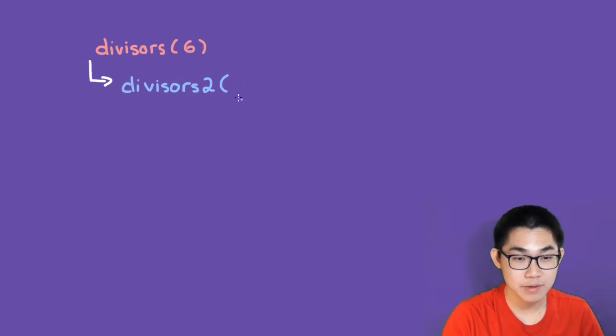And this one is going to have three parameters. We're going to start at 1, going up to this number, which is 6, then an empty list. And you will see why this works in a second. And this is where the recursion starts. So this function is going to call on itself, which is divisors2.